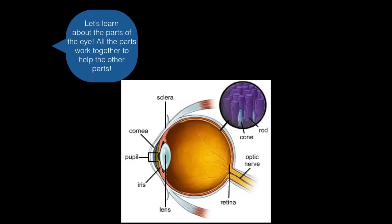Let's learn about the parts of the eye. All the parts work together to help the other parts. There's the pupil, the iris, the lens, the cornea, the sclera, the cones, the rods, and the optic nerve.